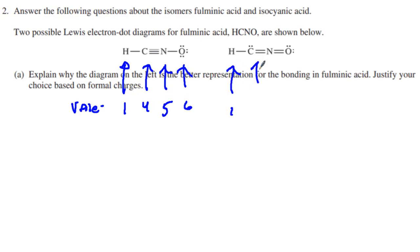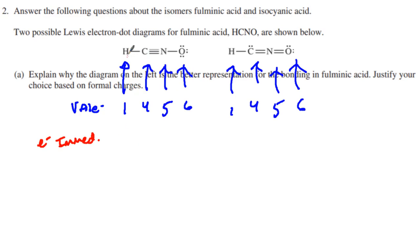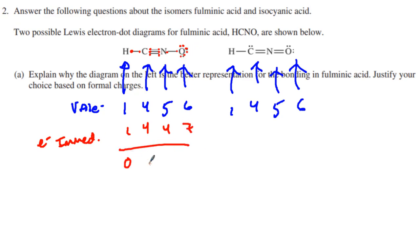It's the same on the other side: one, four, five, six. And what we're also going to look at is how many electrons are immediately surrounding that atom. Hydrogen only has one electron immediately surrounding it. Carbon has one, two, three, four immediately surrounding. Nitrogen has one, two, three, four. And this oxygen has one, two, three, four, five, six, seven. Which means hydrogen has a zero charge on it, and carbon has a zero charge on it.